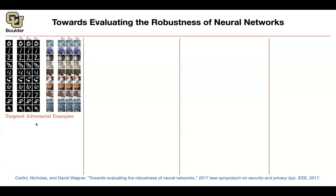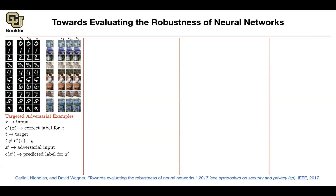For untargeted, you just wanted the network to make a mistake. Let's define them more rigorously. x is an input image. C*(x) is the correct label for x in your dataset. t is a target, because we want to deal with targeted adversarial examples—we are going to specify a target, and we want t to not equal the true class label. We are looking for an adversarial input x', and C(x') denotes the predicted label for x'. What we want is C(x') to equal the target we specified beforehand. That's a targeted adversarial example.